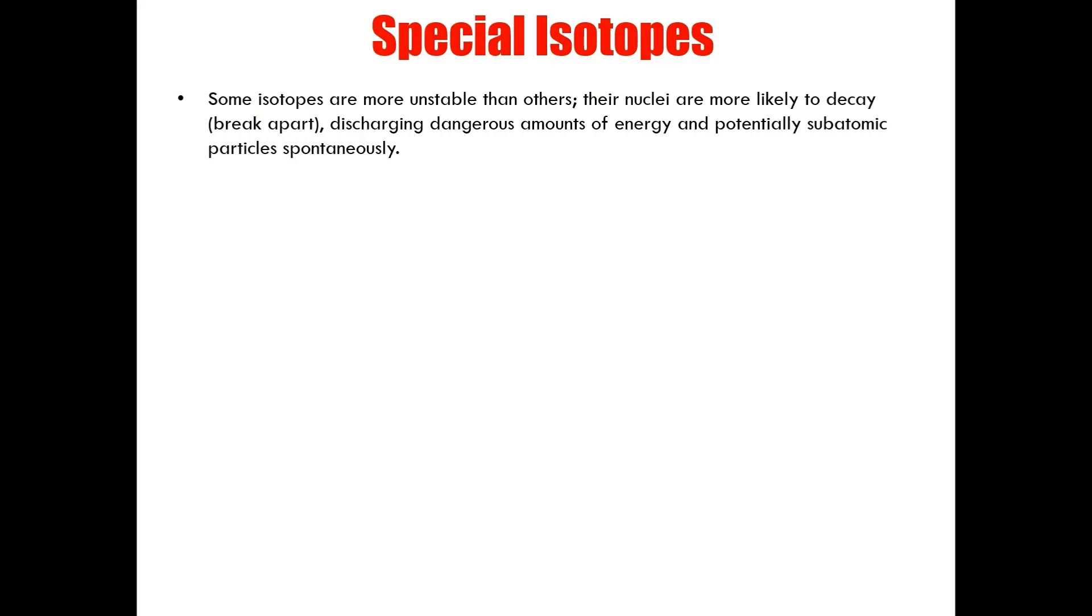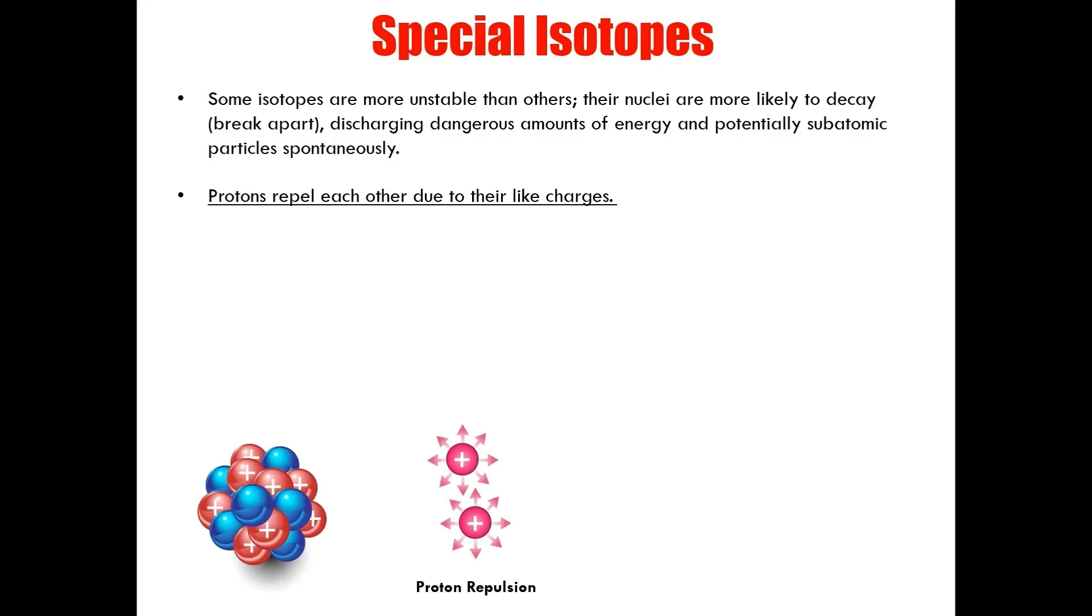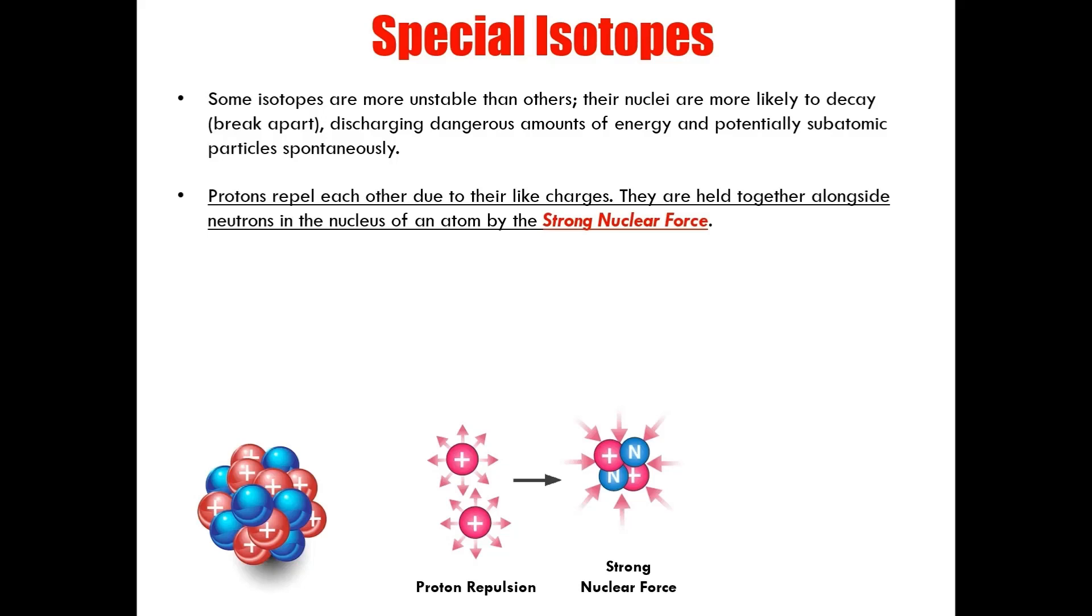Of the many isotopes that scientists have discovered, there are isotopes that exist which have incredible and potentially very dangerous properties. These special isotopes are more unstable than others. The nuclei of these unstable isotopes are more likely to decay or break apart, discharging dangerous amounts of energy and potentially subatomic particles spontaneously. Consider the nucleus of an atom for just a moment. Have you ever wondered how it stays together? We know that electrons keep far apart from one another due to the repulsion of their like charges. But why don't the protons, clustered tightly together in the nucleus, fly apart? We know for a fact that protons repel each other due to their like charges. Well, the reason the nucleus of an atom does not burst apart is because it's held together by the most powerful force known to men. This force is called the strong nuclear force.